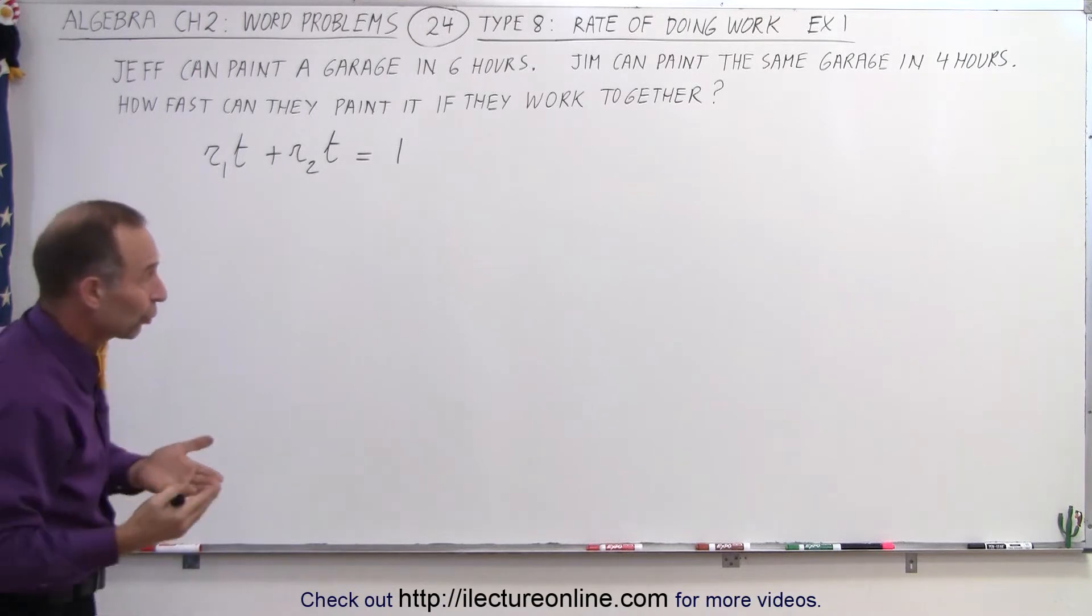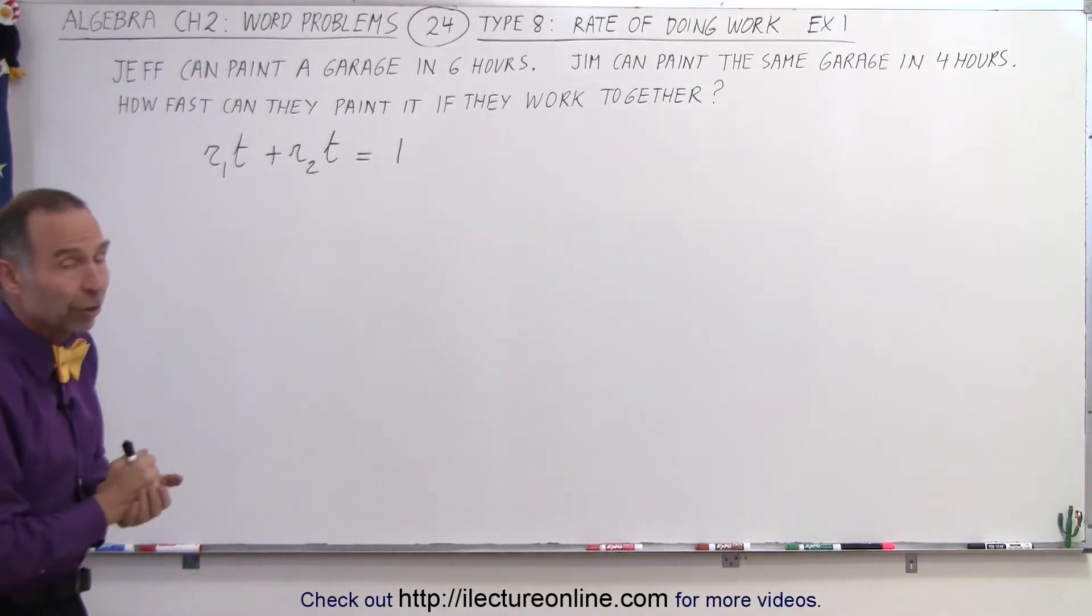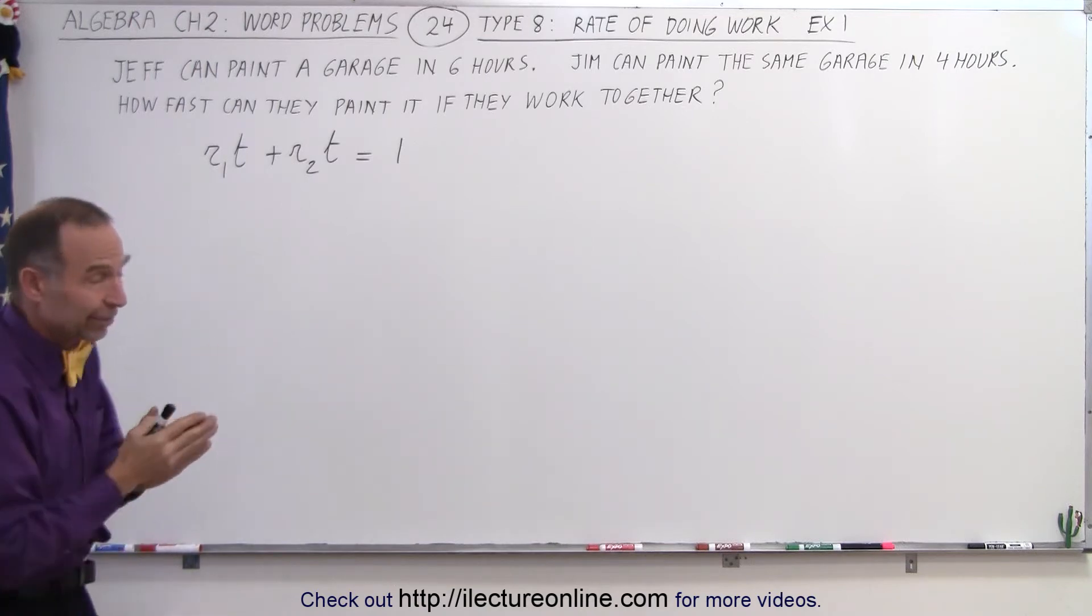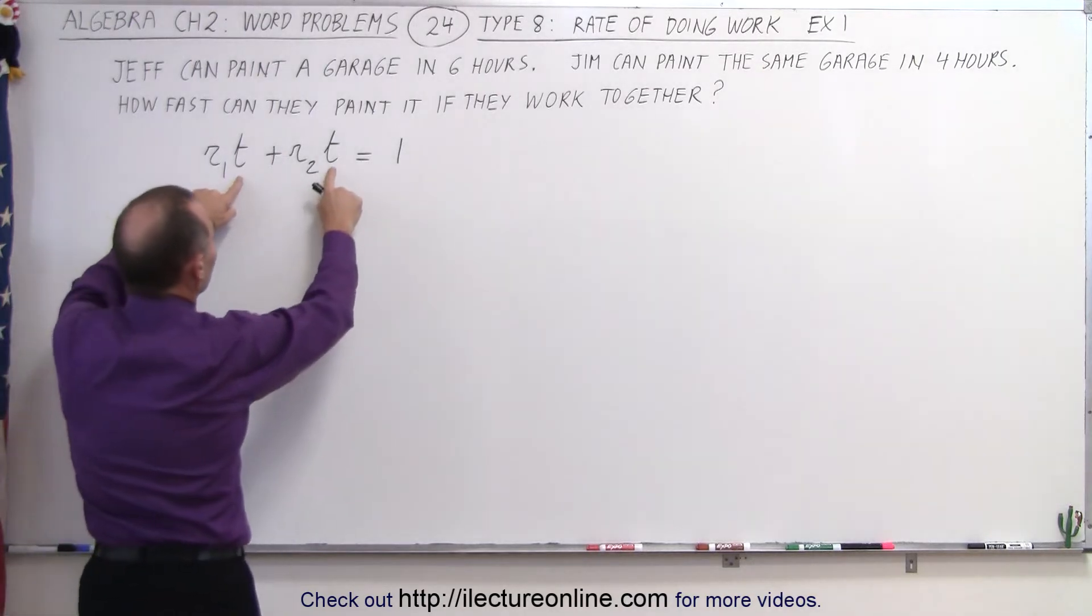So T here represents the time that they'll paint if they work together. We don't know what that is. That's an unknown quantity. It'll be less than four hours because Jim can paint it alone in four hours. Jeff can paint in six hours. So when they work together, it'll be less than four hours. So T represents that unknown time.